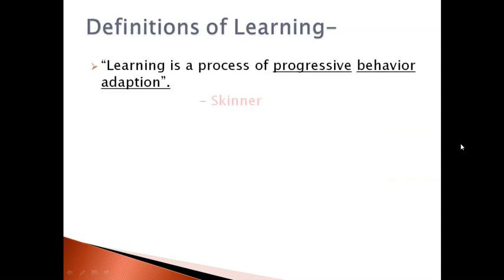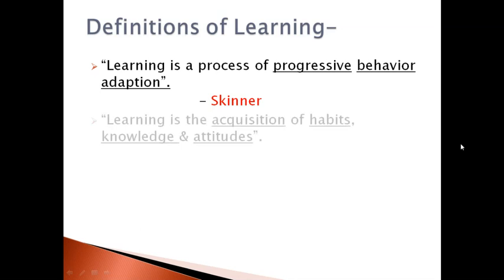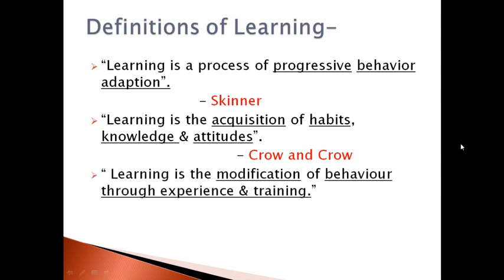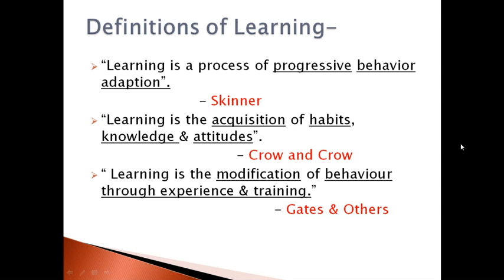According to Skinner, learning is a process of progressive behavior adaptations. According to Crow and Crow, learning is the acquisition of habits, knowledge, and attitudes — it helps in acquiring new knowledge, skills, and attitudes. According to Gates and others, learning is the modification of behavior through experience and training.